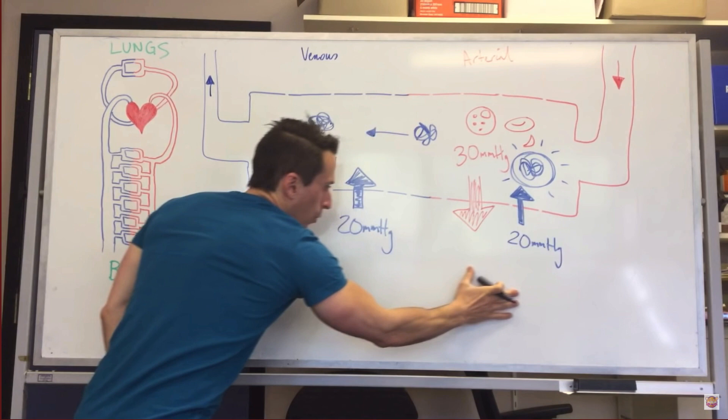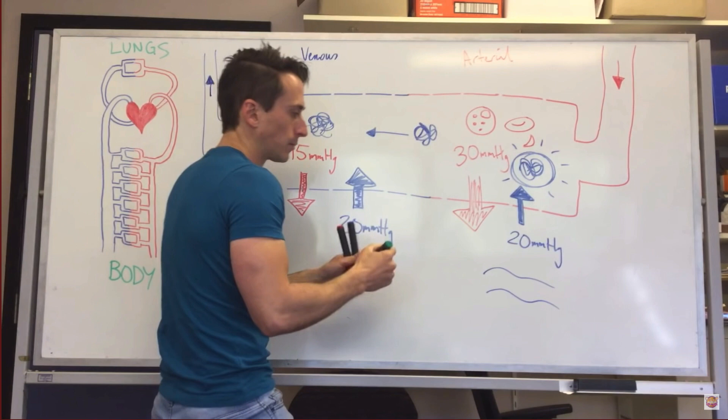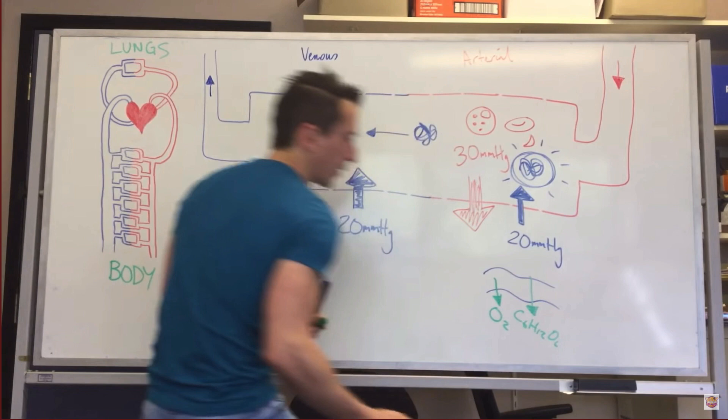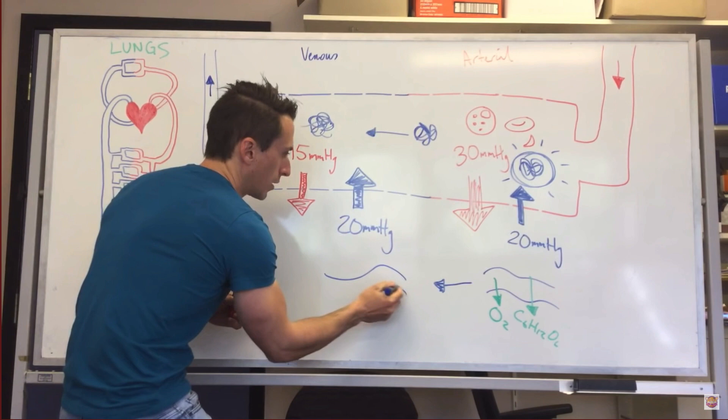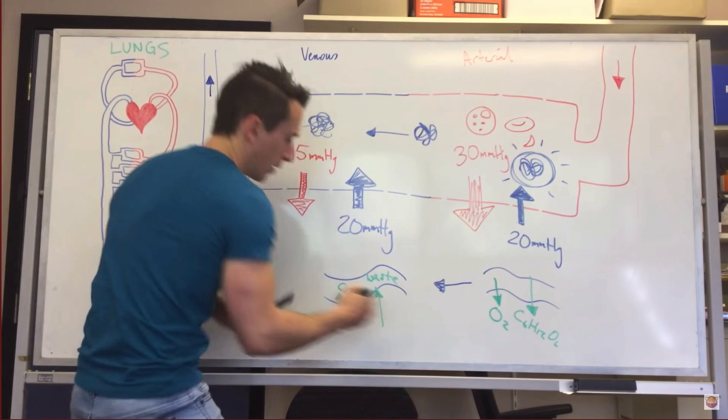The reason this is important is because the fluid on the arterial end is handing over oxygen and substances like glucose, and then on the venous end the tissue is handing it carbon dioxide and waste — and that's where the fluid gets pulled back in and taken back to the heart.